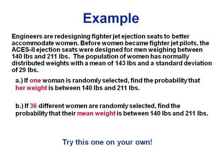Let's try another one with women's weights. Old jet ejection seats were designed with men in mind, for people who weigh between 140 and 211 pounds. Women have normally distributed weights with a mean of 143 pounds and a standard deviation of 29. If we pick one woman randomly, what's the probability that her weight is between 140 and 211 pounds?